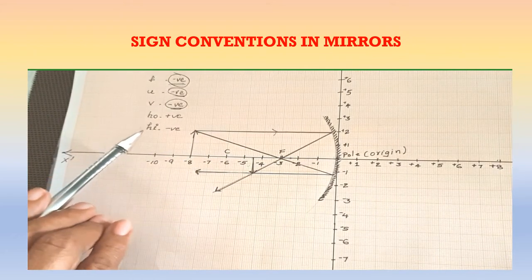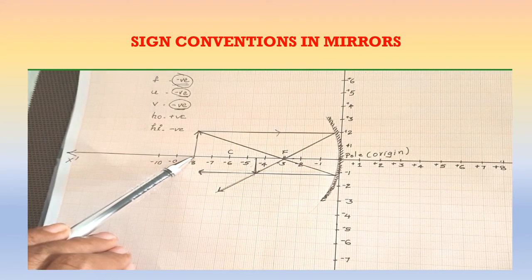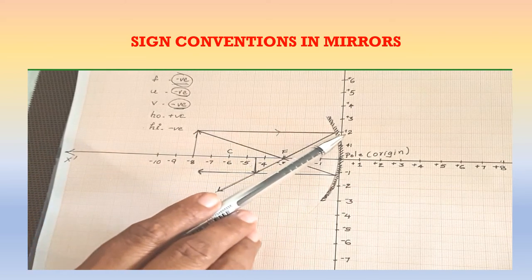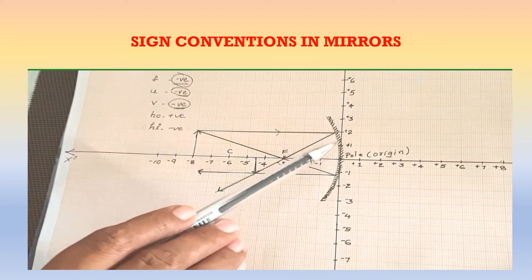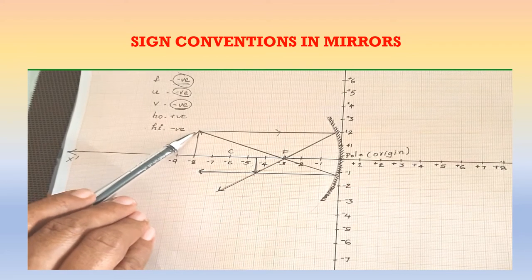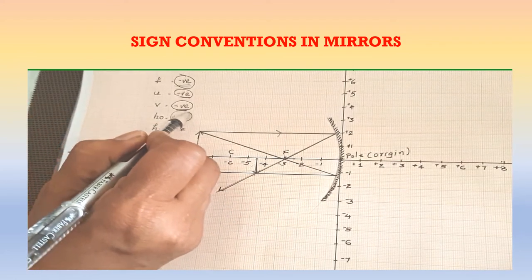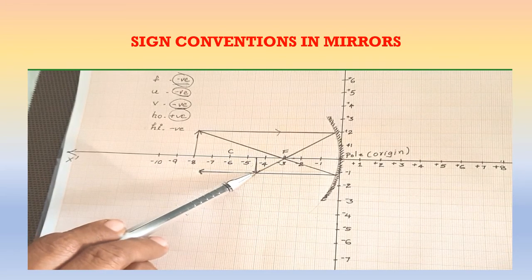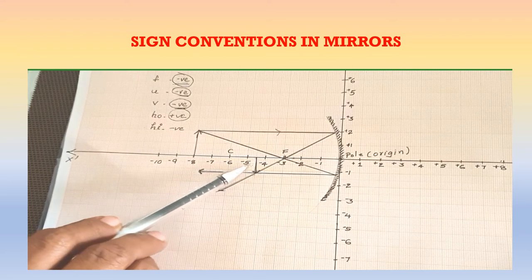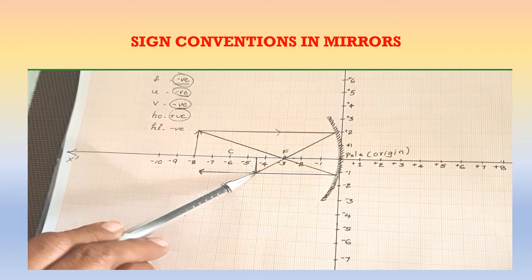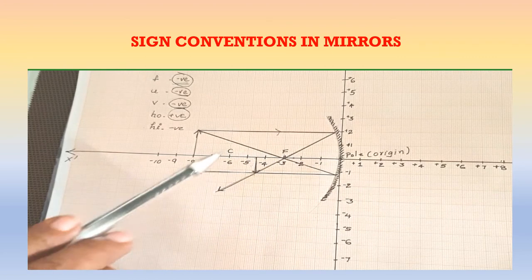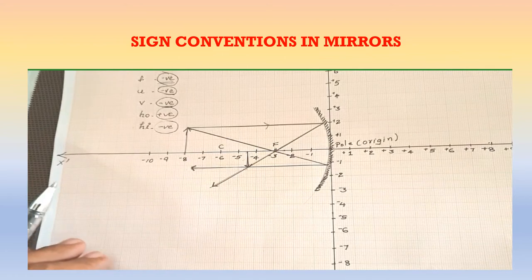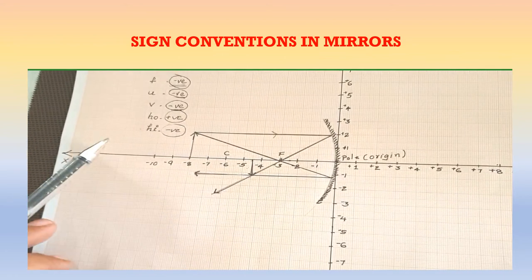Now, what about the height of the object and height of the image? The height of the object is normally drawn in the upward direction from the x-axis, so we get it as a positive number — here it is +2 cm. Height of the object is positive in almost all cases. The image here is inverted, so the height of the image is measured in the downward direction and we get a negative number — here it is −1.2 cm. If the image is erect, the height of the image is positive.